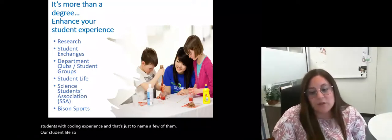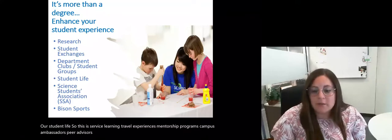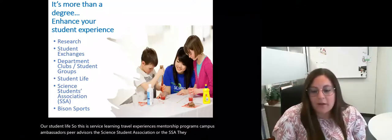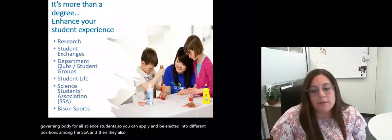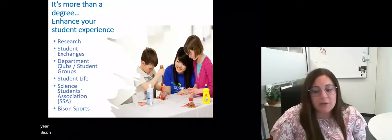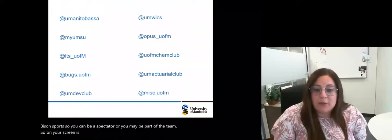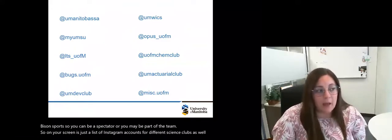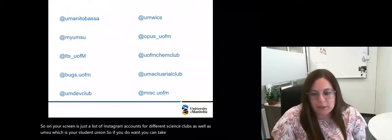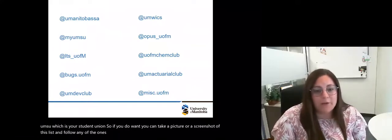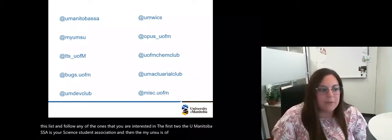WICS, which is Women in Computer Science. Dev club provides students with coding experience and that's just to name a few of them. Student life—service learning, travel experiences, mentorship programs, campus ambassadors, peer advisors. The Science Student Association or the SSA, they are the governing body for all science students. You can apply and be elected into different positions among the SSA. And then they also put on lots of different events throughout the year. Bison sports—you can be a spectator or you may be part of the team. On your screen is just a list of Instagram accounts for different science clubs as well as UMSU, which is your student union. You can take a picture or a screenshot of this list and follow any of the ones that you are interested in.